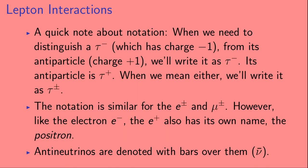I should give a quick note about notation. When we need to distinguish a tau minus, which has a charge of minus one, from its antiparticle, which has charge plus one, we'll write it as tau minus. Its antiparticle we'll write as tau plus. And when we mean either of them, we'll write it as tau plus or minus. The notation is similar for the E plus and minus and the mu plus and minus. However, like the electron E minus, the E plus also has its own name: the positron. And finally, antineutrinos are denoted with bars over them, so nu-bar.